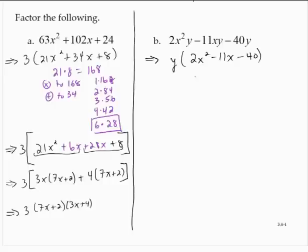2 times negative 40 is negative 80. So I need a pair of numbers that multiplies to negative 80 and adds to negative 11.